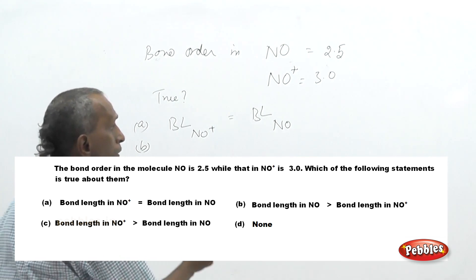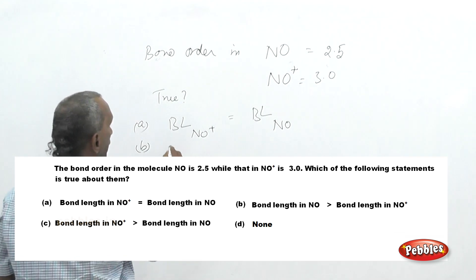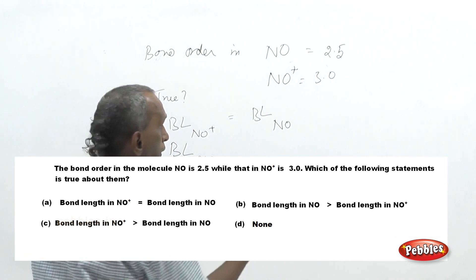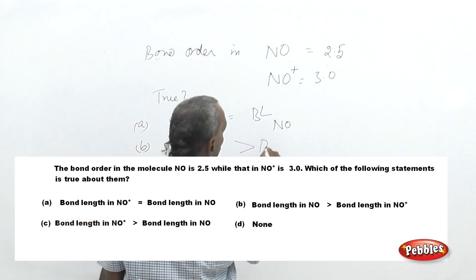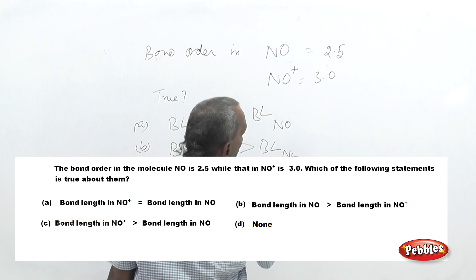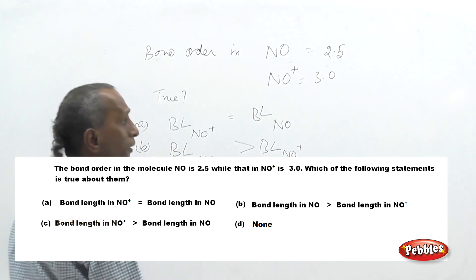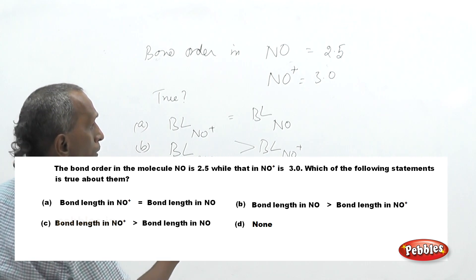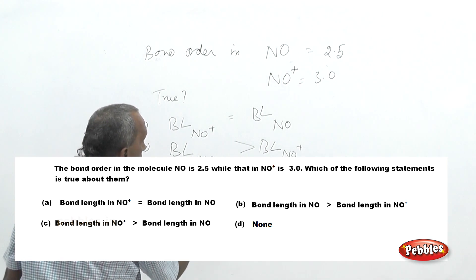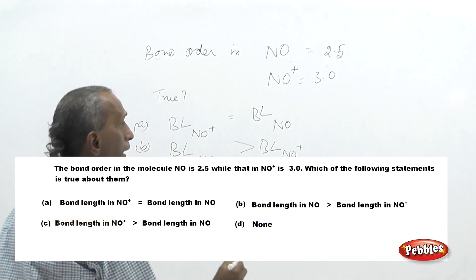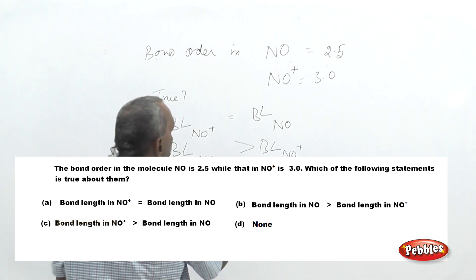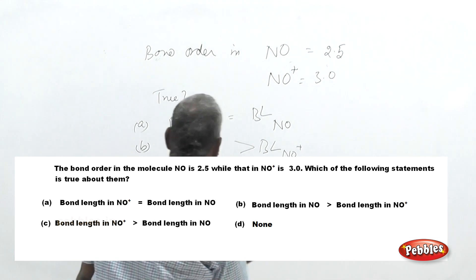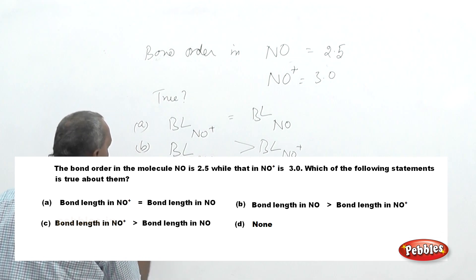The choices are: first, bond length of NO⁺ equals bond length of nitric oxide; second, bond length of nitric oxide is greater than that of nitrosyl cation; third, bond length of nitrosyl cation is greater than that of nitric oxide; fourth, none of the statements is true.